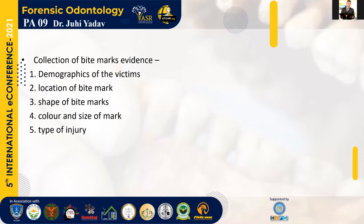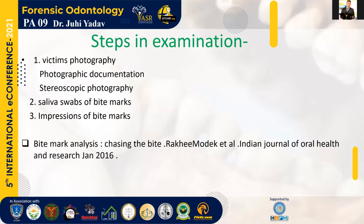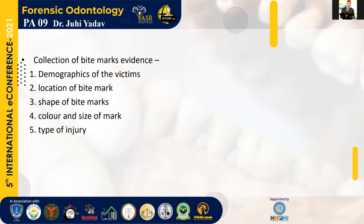The location of bite marks, shape of the bite marks — suction marks are basically seen in the case of assault — and the color and size of the mark are all important. It is said that whenever there is a bite mark over the body, we should collect evidences within 24 hours, because they are going to change in shape as well as color. Certain types of injuries also connect to give us an idea about what type of crime has occurred and in what context.